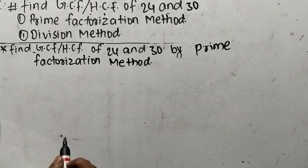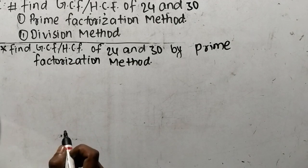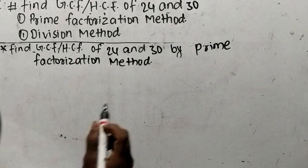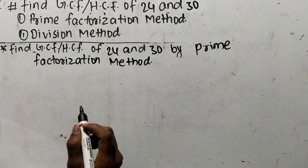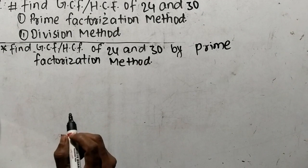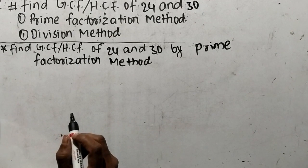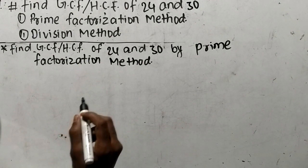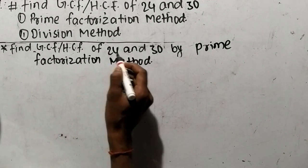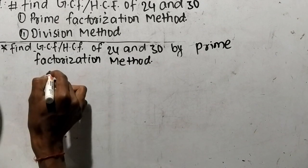While finding out GCF or HCF by prime factorization method, first of all we have to find out the prime factors of the given numbers. So our numbers are 24 and 30.